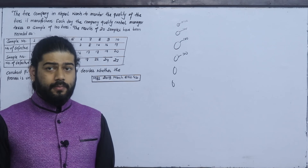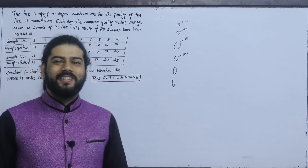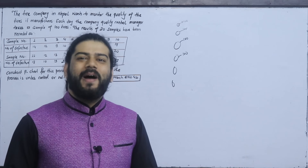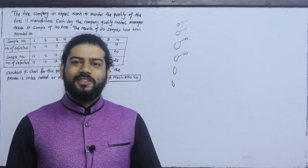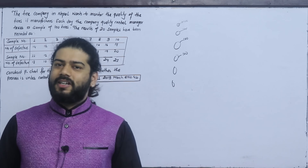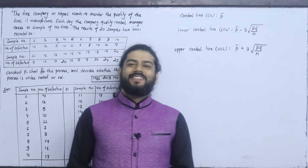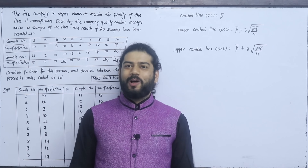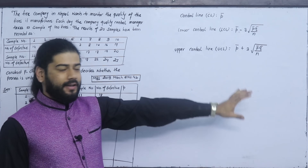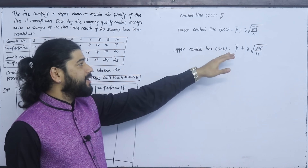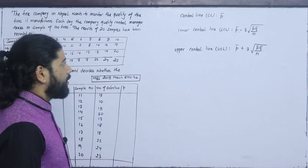We need to construct a P-chart. In the previous class we discussed the formula. The central line is P-bar. The fraction of defectives is P-bar. The lower control limit is LCL = P-bar minus 3 times the standard deviation. We have to solve this problem step by step.